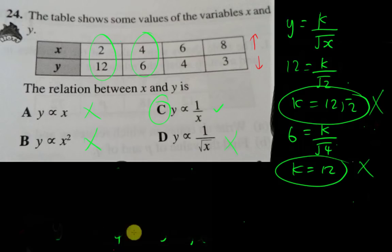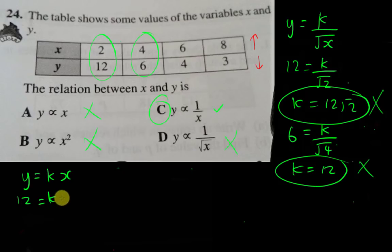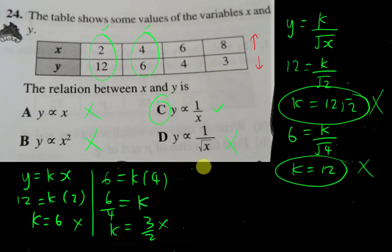I just hope you fully understand about variation because variation for me is a bonus mark question for all the modern math students. For A, if I want to add a k, k is always beside x. When y is 12 and x is 2, your k is 6. Then I try the second combination: 6 and 4. 6 equals k×4, then k is 6 over 4, so k is 3/2. If you try the first and second combinations and the k is not the same, then you know it's wrong already.